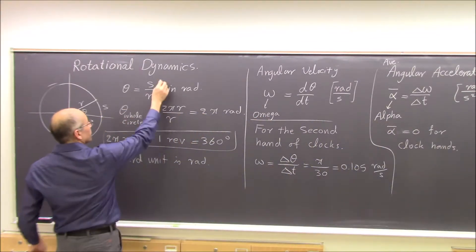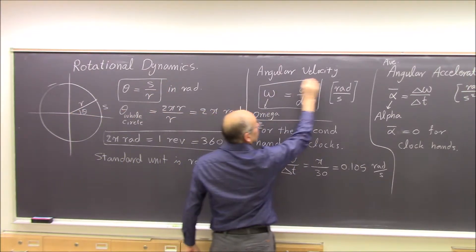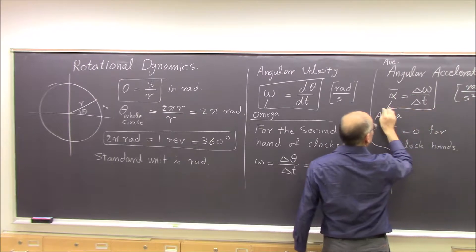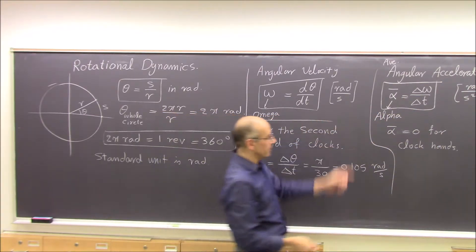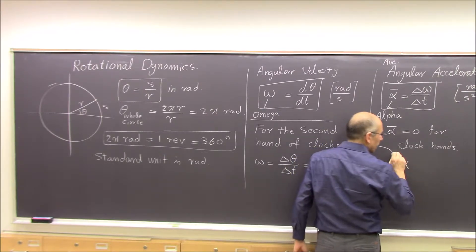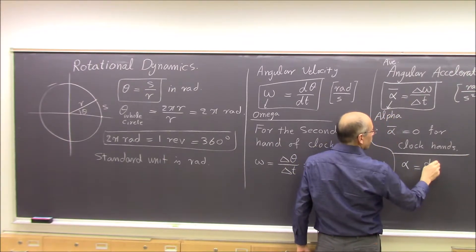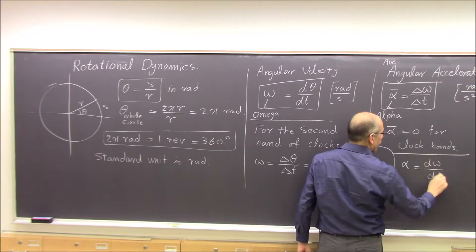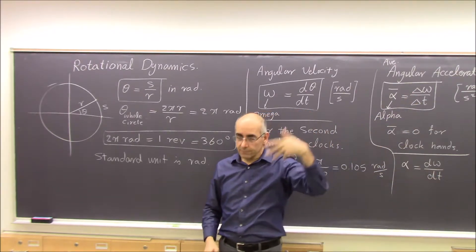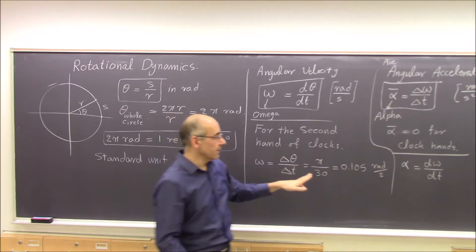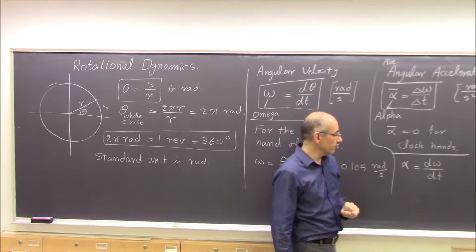So we have the definition of theta, the definition of omega, and the definition of average alpha. For the instantaneous value of alpha, it is dω/dt — the limit of Δω/Δt as Δt approaches zero. In calculus we call this the derivative of omega with respect to t.